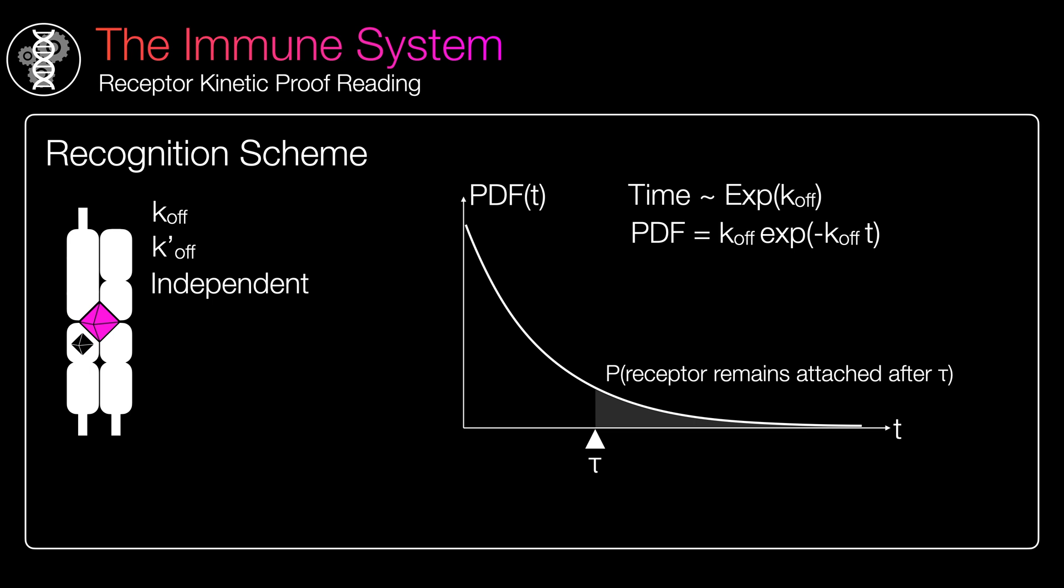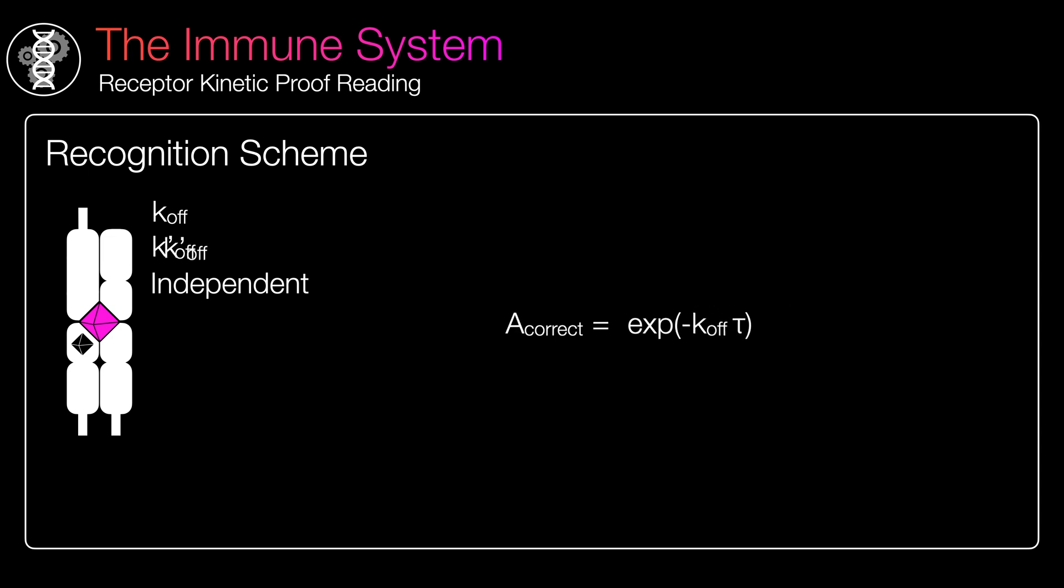We can look at the probability that it remains bound after some time has passed by taking this integral, and we can compare the correct-incorrect binding probabilities the same as before. Plugging the experimental values, we can see that the error rate is so low, around one in a million chance. Isn't our immune system really cool?